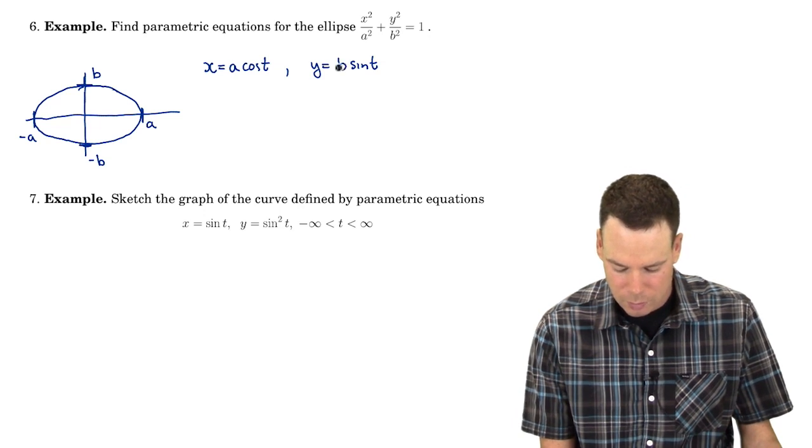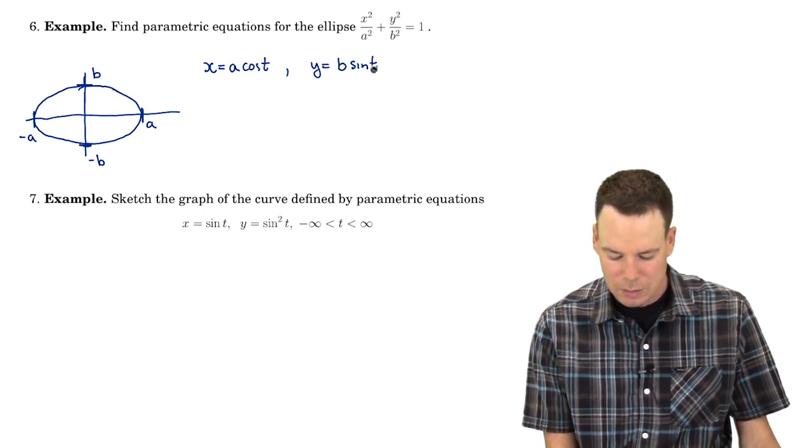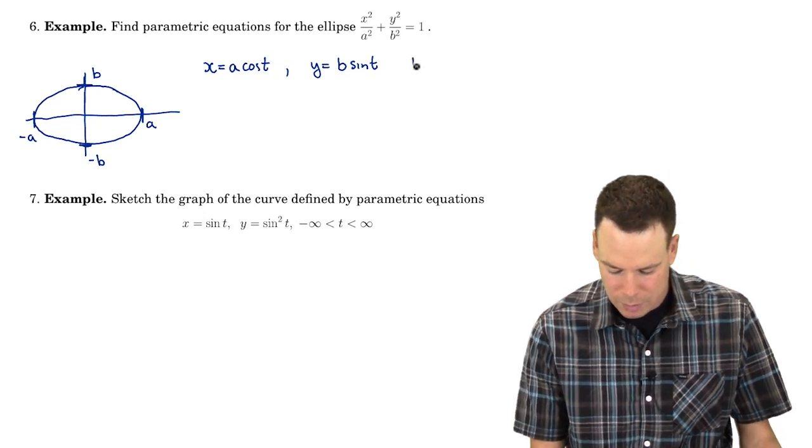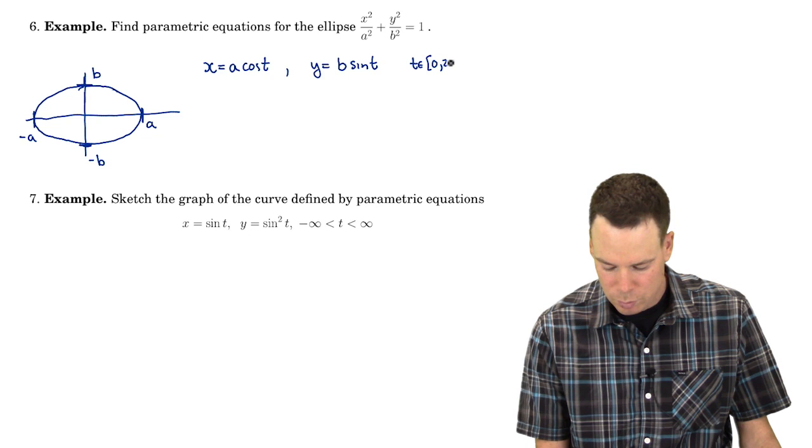And similarly for my y function, I'm going to make that b sine of t so it reaches up to b and down to negative b. And I'll let my t values go from 0 to 2π.